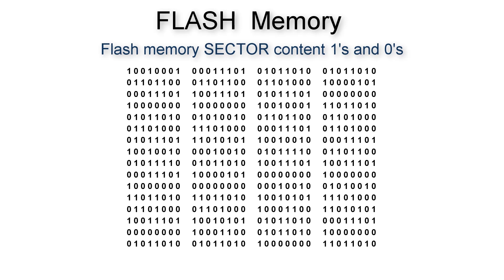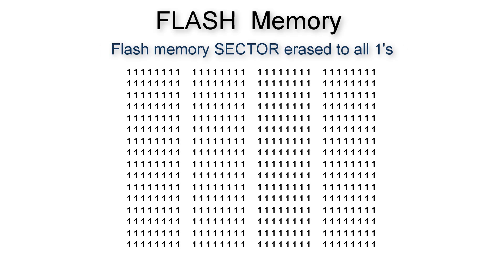Flash gets its name from the requirement to do an all-bit bulk flash erase of a whole sector or block of the memory, any time even a single zero bit in that sector needs to be changed or reprogrammed back to a one.